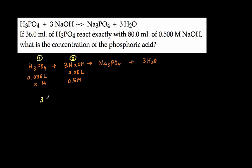So let's apply the shortcut. So the coefficient in front of 2 was 3, and then M1 was x molar, and then V1 was 0.036 liters. And then the coefficient in front of 1 was just 1, and then M2 was 0.5 molar, and then V2 was 0.08 liters.